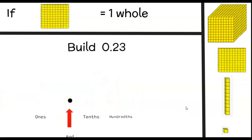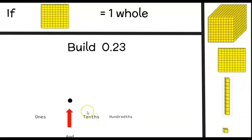Once your child has an understanding of this, they can start to build their own numbers. Let's go back to this representation. If the hundredths flat is going to be one whole, then how would you build zero and twenty-three hundredths? We need to think: if this is going to be one whole, what base 10 block do I use to represent the tenths place? One hundred divided by ten is going to give me ten, so I use the ten stick — and I need two ten sticks.